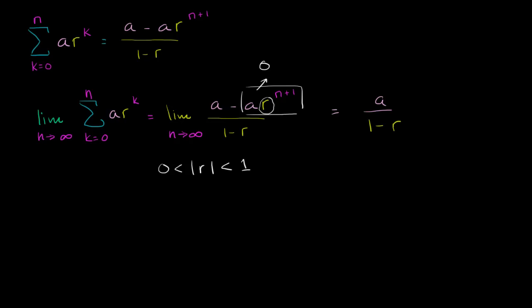So for example, if I had the geometric series, if I had the infinite geometric series, let's just have a simple one. Let's say that my first term is 1, and then each successive term, I'm going to multiply by 1 third. So it's 1 plus 1 third plus 1 third squared plus 1 third to the third plus.